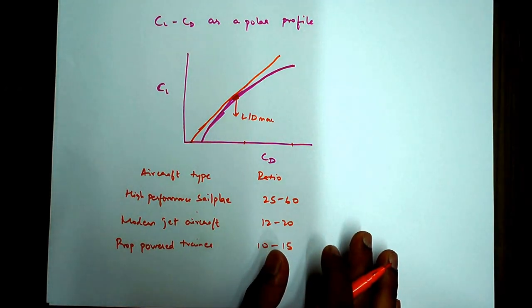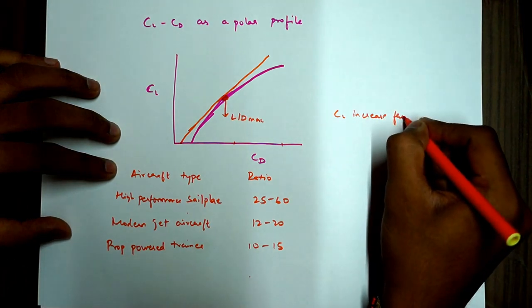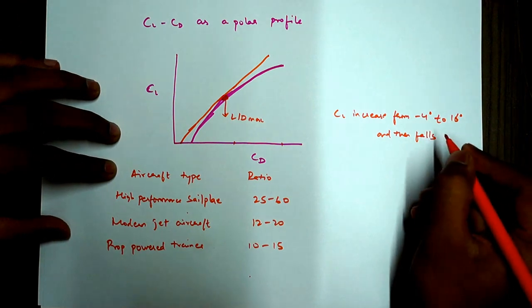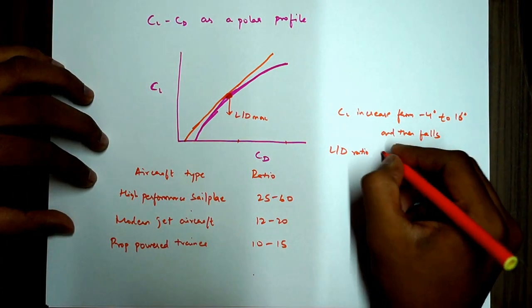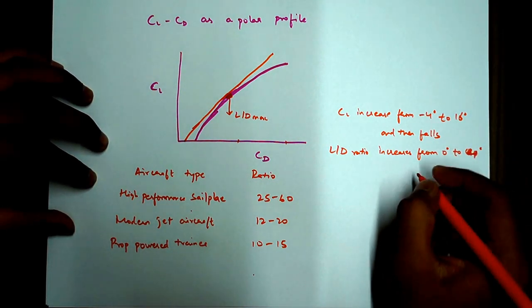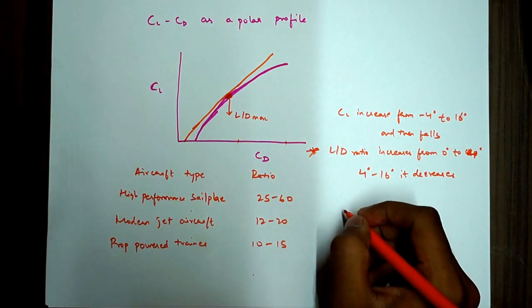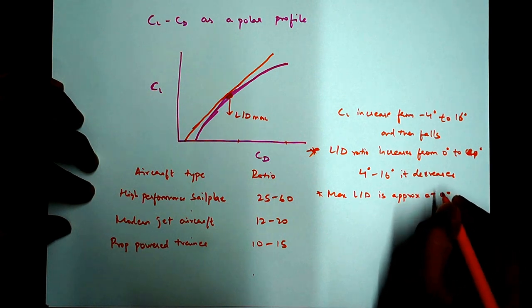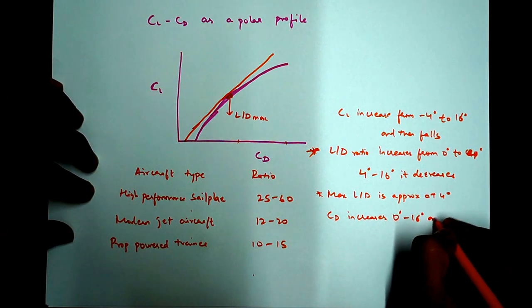So that's all about CL and CD. So what key points to remember here is, you can just note this down, CL increases from minus 4 degrees to 16 degrees and then falls. You can refer the previous video, the previous page also that I have explained. And L by D ratio increases from 0 degrees to 4 degrees. And from 4 degrees to 16 degrees, it decreases. This point is important. And maximum L by D is approximately at 4 degrees angle of attack. And CD increases 0 to 16 degrees and exponentially beyond that.